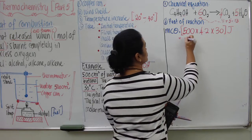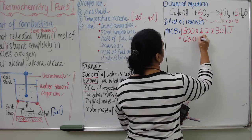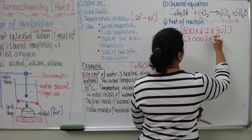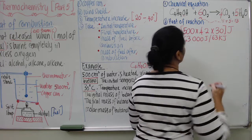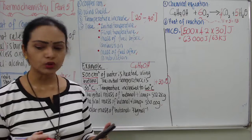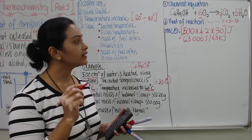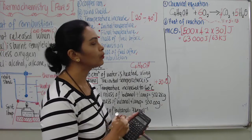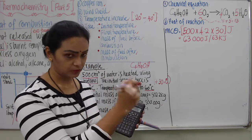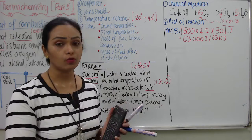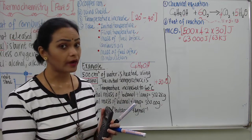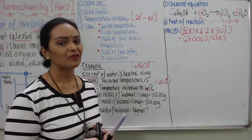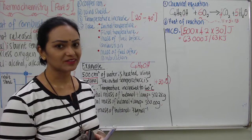The result is going to be quite large. Q = 500 × 4.2 × 30 = 63,000 joules, or 63 kilojoules. Since we are using a high volume of water and the temperature increase is also significant, we get a high value for MCθ.